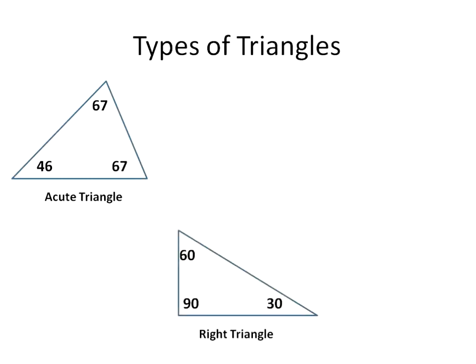A right triangle has one angle measurement that is exactly 90 degrees. Here's an example of a triangle where it's 90 degrees, 60 degrees, and 30 degrees. One angle measurement is 90 degrees, which means it is a right triangle. With an acute triangle, all three have to be acute. With a right triangle, just one has to be a right angle.